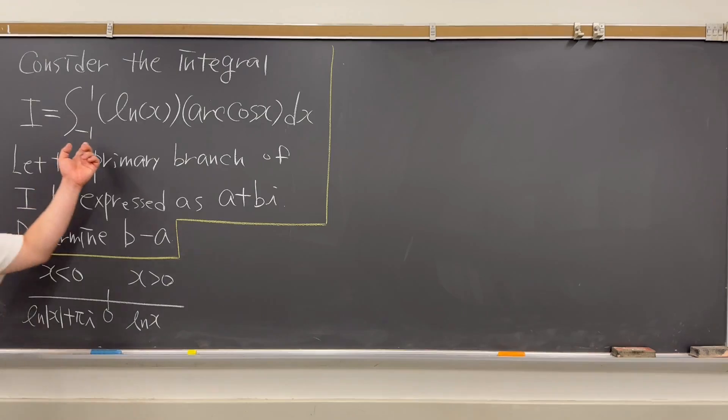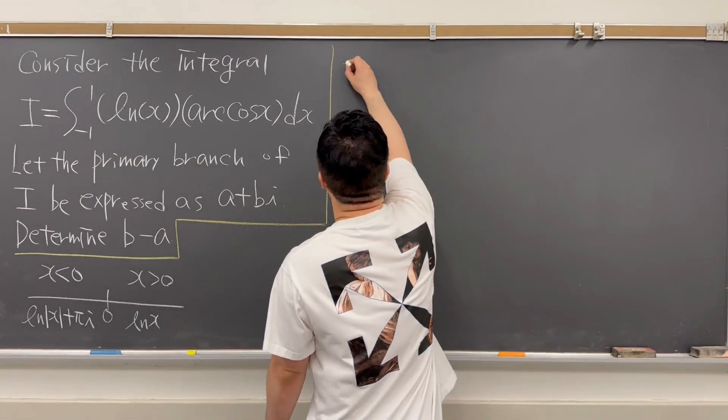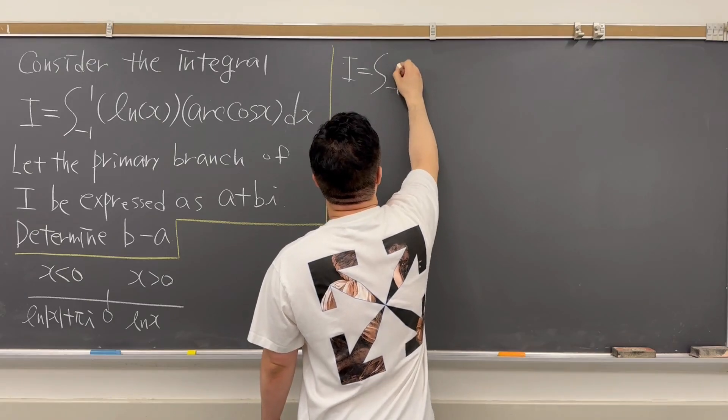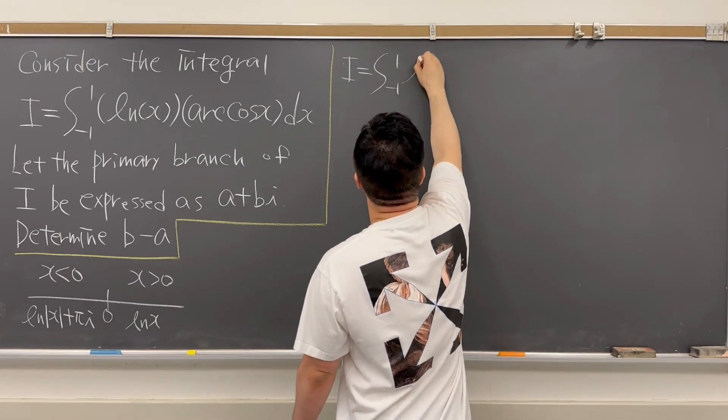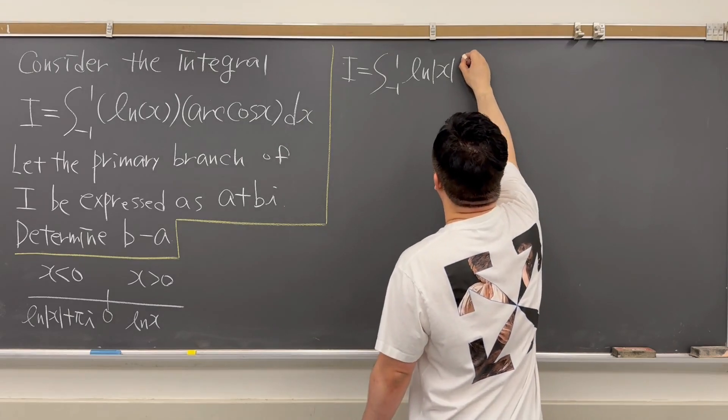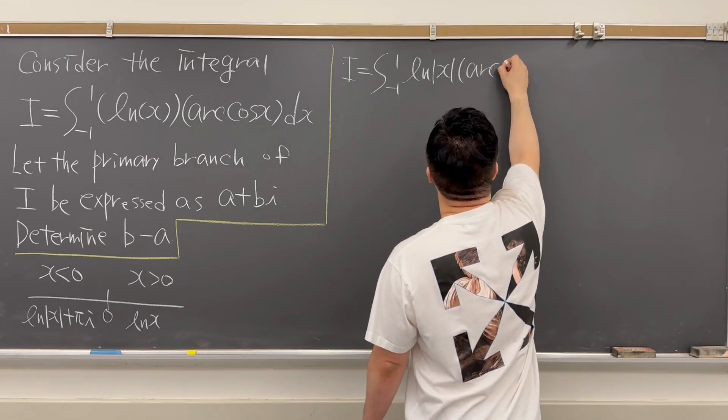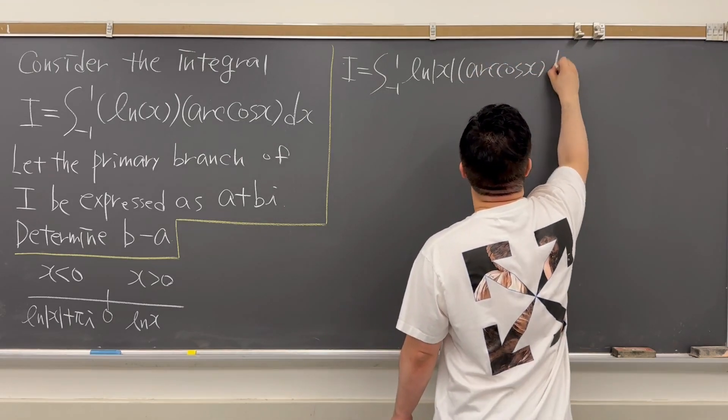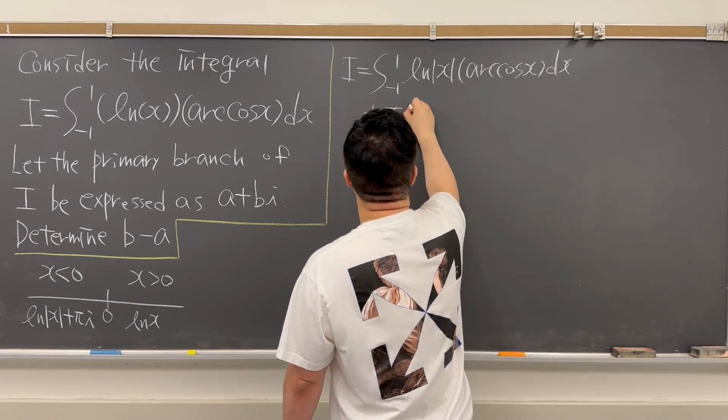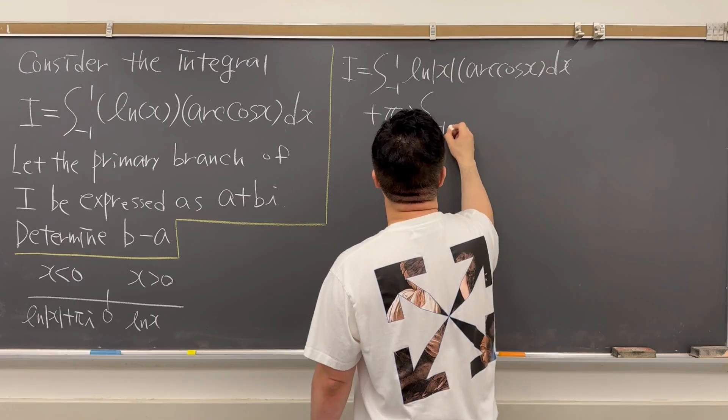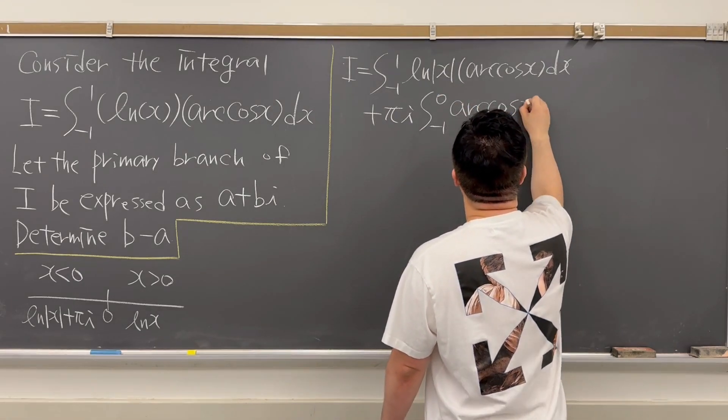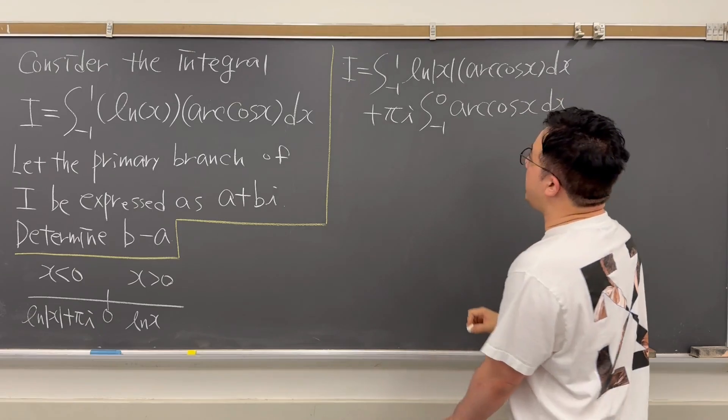Using this, we can rewrite your integral. So your integral I is now equal to from negative 1 to 1, ln of absolute value of x multiply this by arccos(x) dx, plus πi times integrating from negative 1 to 0, arccos(x) dx.